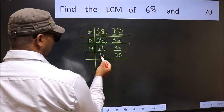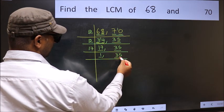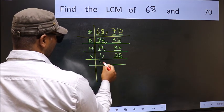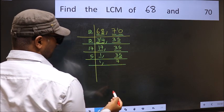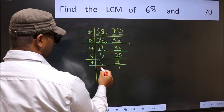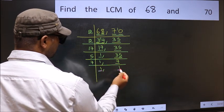Now we got 1 here, so focus on the other number 35. Last digit 5, so take 5. When do we get 35 in 5 table? 5 times 7 is 35. Now we have 7. 7 is a prime number, so 7 times 1 is 7. So we got 1 in both the places.